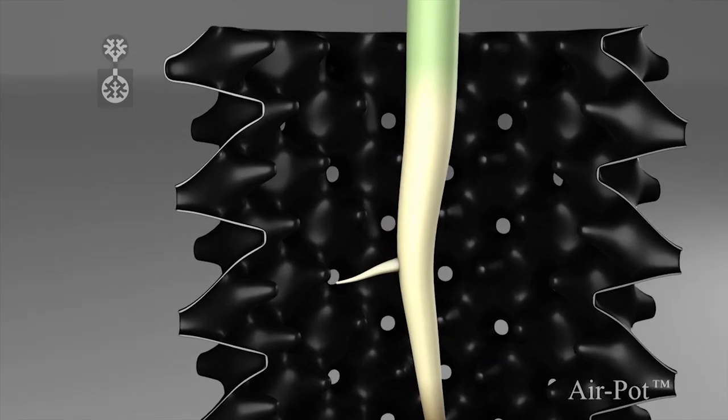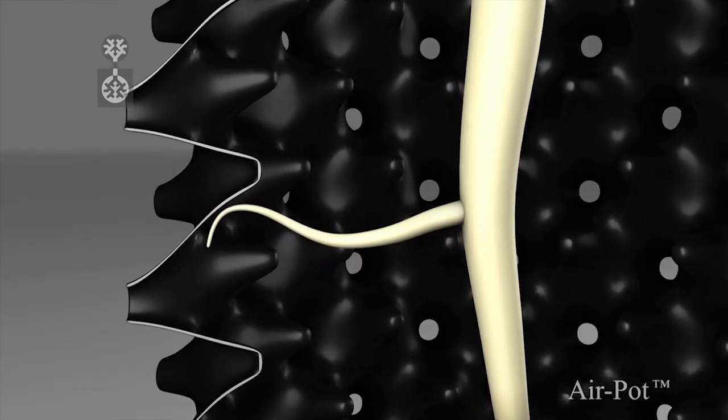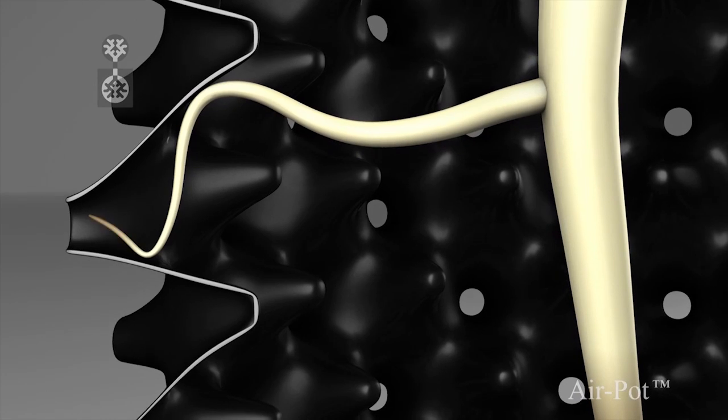The shape of the pot wall guides every root towards an airhole, where the increased air in the soil dehydrates the tip, pruning it and stimulating root branching right back to the stem.